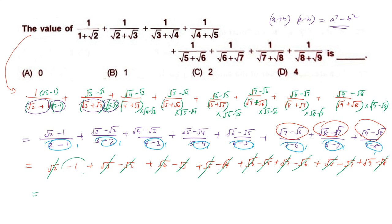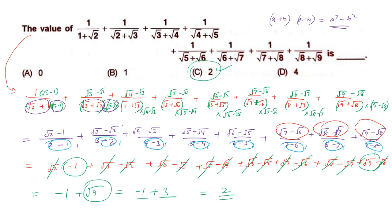What remains is −1 and +√9. Since √9 = 3, we have 3 − 1 = 2. So the answer to this question is 2.